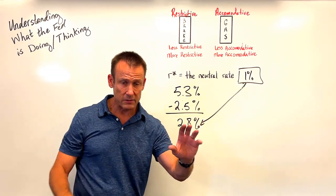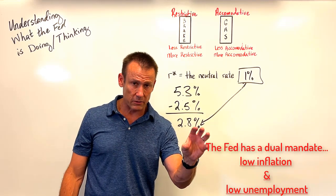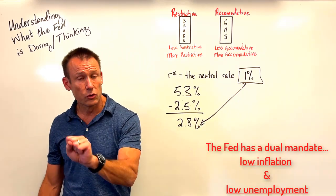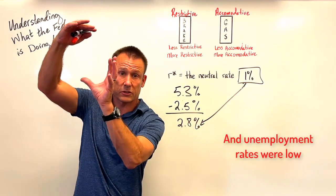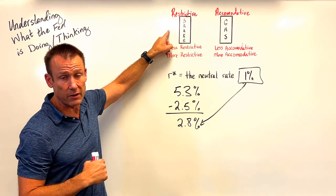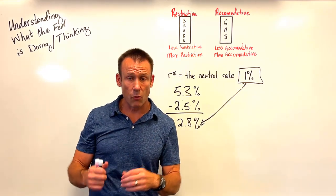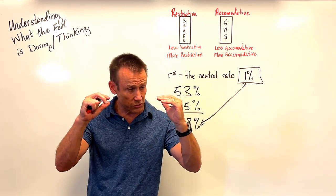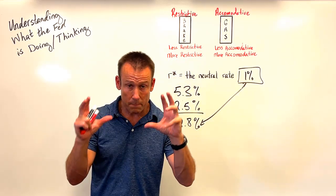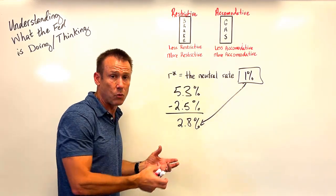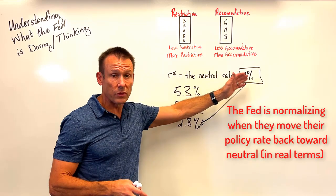The Fed has two mandates: they need to keep unemployment at full employment — an unemployment rate of around 4.3%, give or take — and they want to keep the inflation rate at 2%. Two and a half years ago, inflation shot up, so all their attention went to high inflation and they put their foot down on the brake pedal, becoming more and more restrictive. But now in September 2024 they see balanced risk — just as good a chance the unemployment rate ticks up as the inflation rate ticks up. They don't want to be as restrictive anymore; they want to start normalizing.